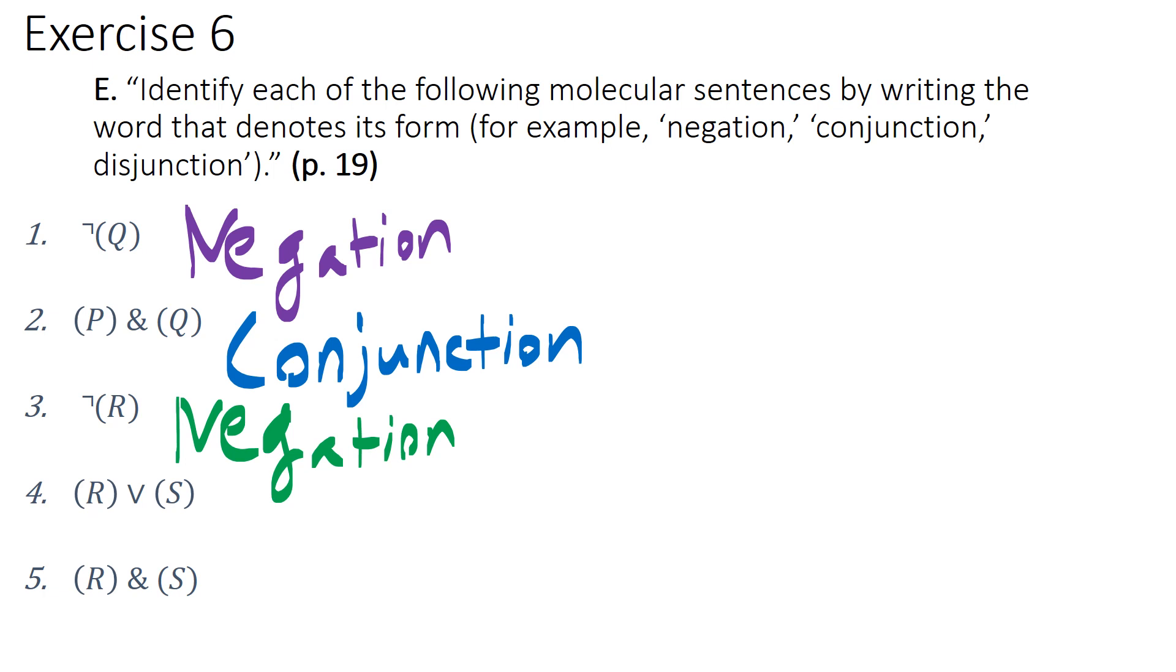Sentence 4, R or S. We have a descending wedge, so it's an or statement. Thus, it is a disjunction.